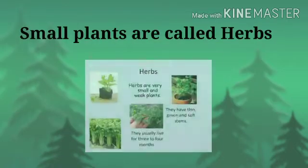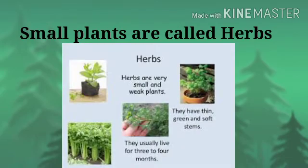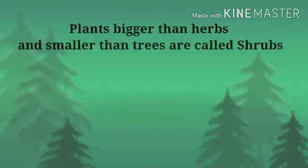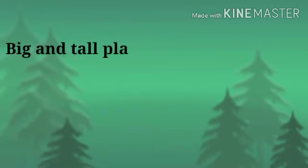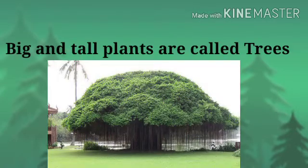Small plants are called herbs. Plants bigger than herbs and smaller than trees are called shrubs. Big and tall plants are called trees.